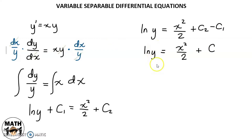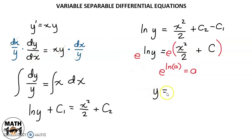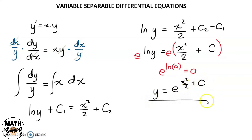If we want to get y in terms of x, paano natin matatanggal yung ln dito? So, recall: e of ln of any variable is equal to that variable. So, punin natin yung e ng both sides. We'll have y is equal to e raised to x squared over 2, plus c. This is now the general solution of the differential equation y prime equals xy.